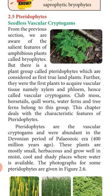The next cryptogam we are going to study is pteridophytes. Pteridophytes are said to be seedless vascular cryptogams. Cryptogams are plants which do not produce flowers and seeds. Pteridophytes are cryptogams, but unlike algae and bryophytes, they possess vascular tissues — the xylem and phloem are present. Hence pteridophytes are called seedless vascular cryptogams.